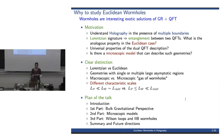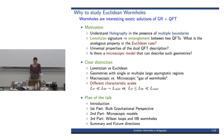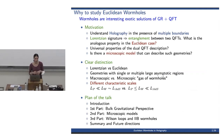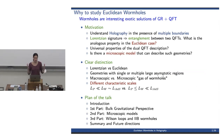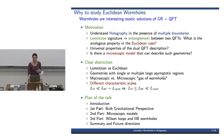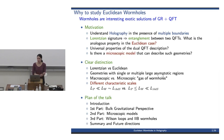Wormholes are solutions of gravity plus matter and they can have more than one asymptotic region, so they are a perfect laboratory to understand holography in the presence of multiple boundaries. For Lorentzian wormholes, such as the Einstein-Rosen bridge connecting the two asymptotic regions of the eternal black hole, this wormhole corresponds to entanglement between the two CFTs that live at each of the two boundaries. But we don't know what the analogous property is in the Euclidean case. By studying Euclidean wormholes we'd like to see if there are universal properties that pertain irrespective of the dimensions or matter content, and in the end we would like to find the microscopic model that could give rise to such geometries.